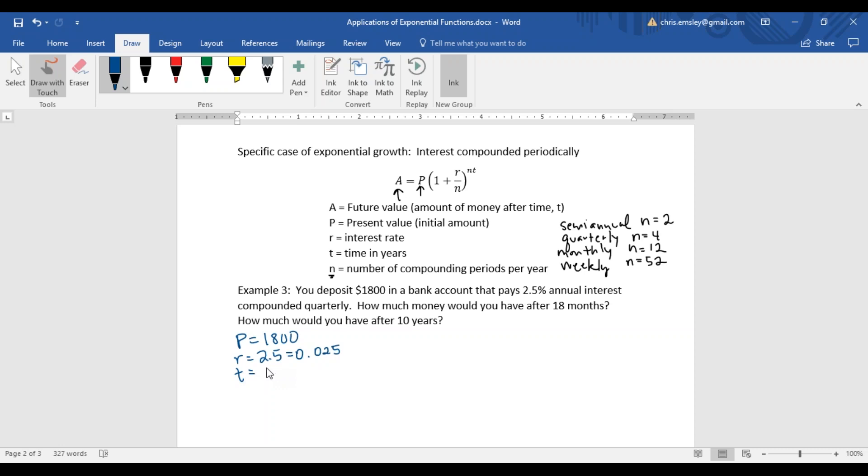T in our first scenario is 18 months. And n is, it said compounded quarterly, so n is 4.